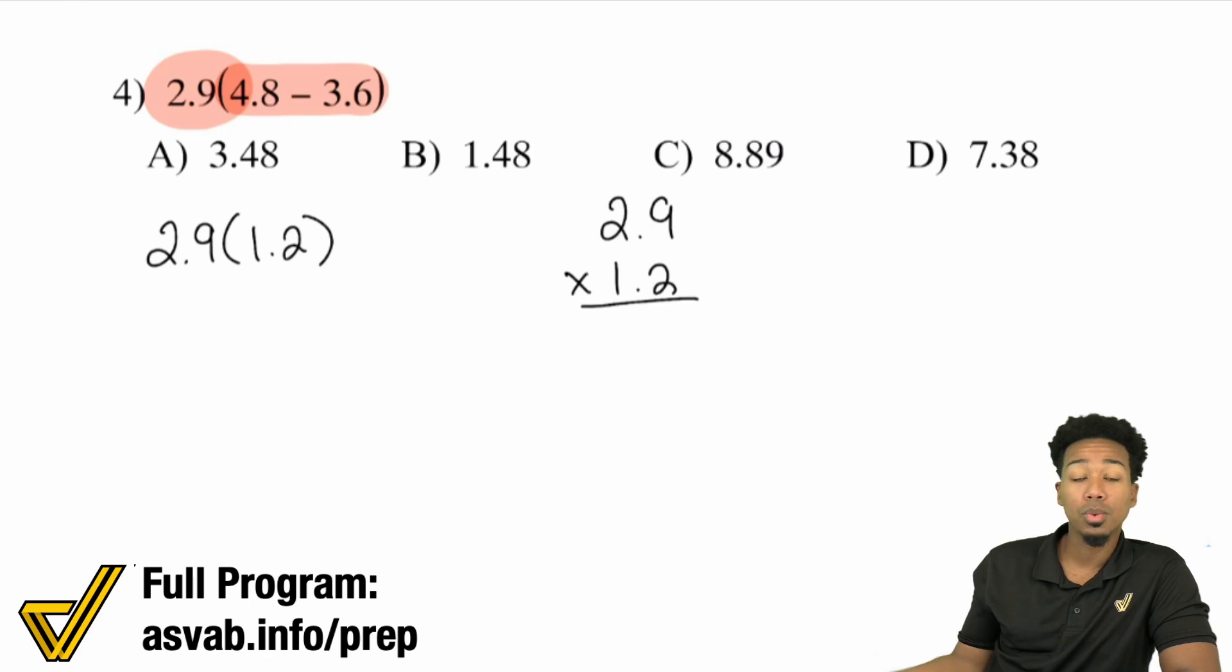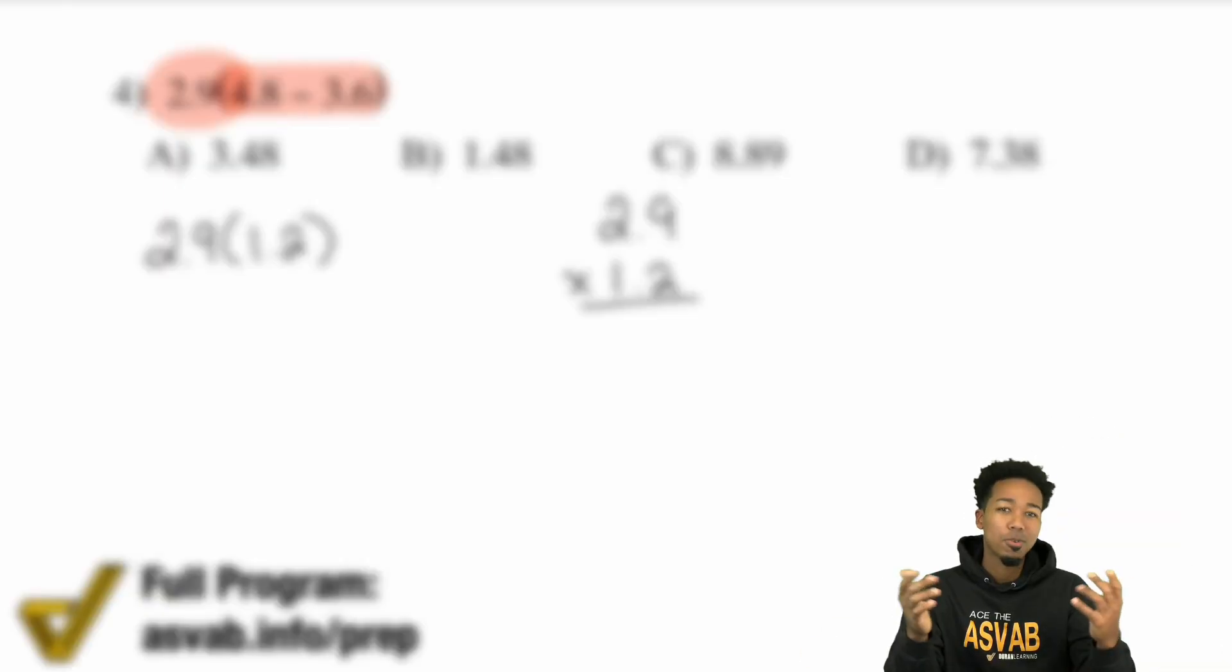You can take care of 2.9 times 1.2, just like that. With some mental math, I notice that this is going to be the same thing as saying 2.9 times 1 plus 2.9 times 0.2. So that'll end up becoming 2.9 plus 0.58. So 2.9 plus 0.58, that'll be 3.48. 3.48 is what that should be. So with that, let's go and see what the answer is going to be here.